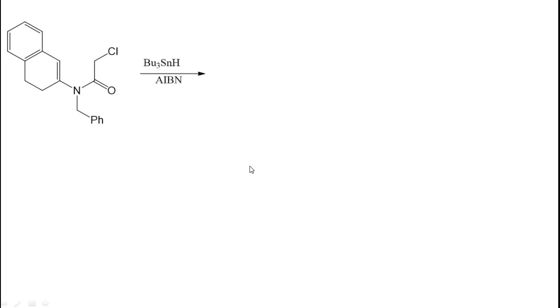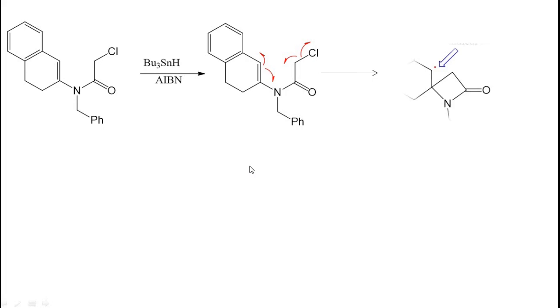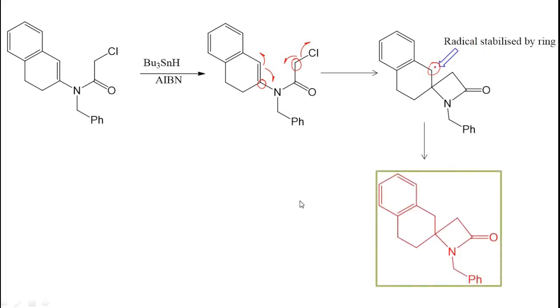Let us try another reactant. The chlorine is removed and the double bond is shifted here. Again, this cyclisation gives a radical. Here, this carbon combines with this carbon — not with the other carbon. A radical is formed here, and this radical is stabilized by the ring. So this gives the final product.